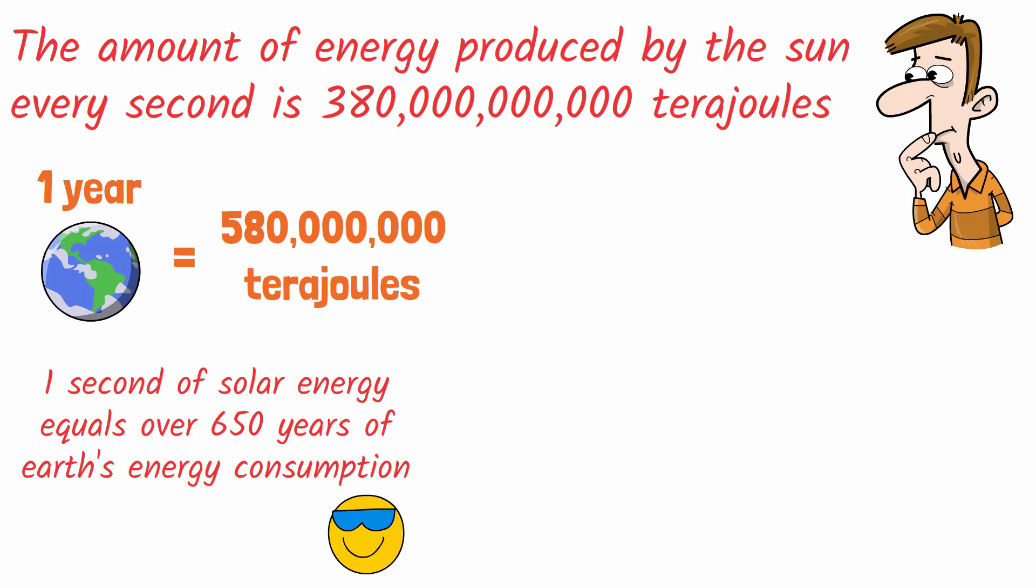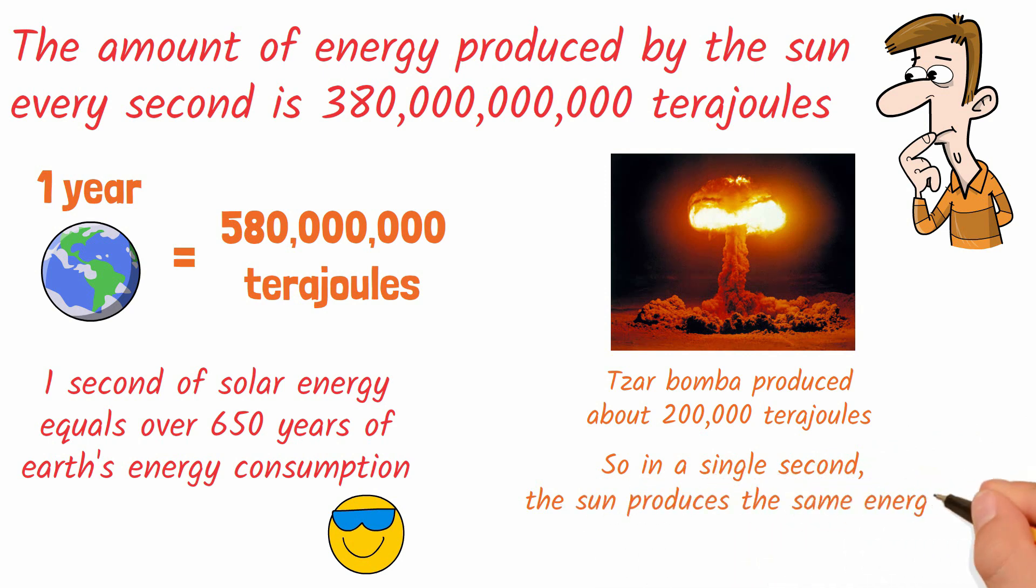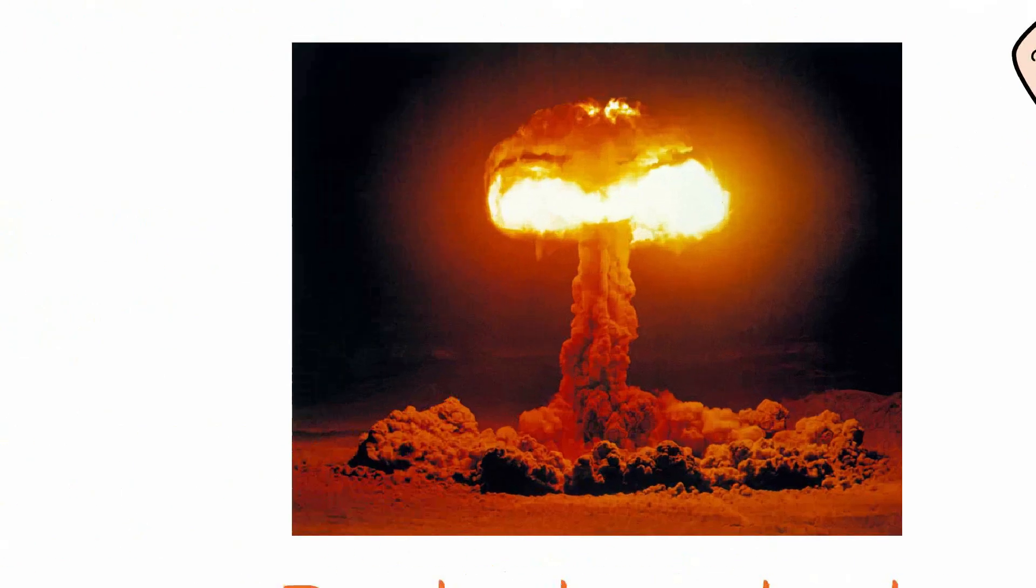The largest hydrogen bomb ever, Tsar Bomba, produced about 200,000 terajoules of energy. So in a single second, the Sun produces the same energy as 1.9 million Tsar Bombas.